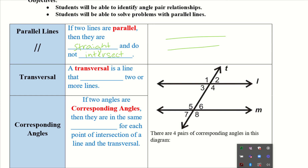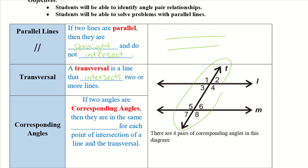A transversal is a line that intersects two or more lines. This is our transversal here, marked with a T for transversal, and it goes through both of my parallel lines.